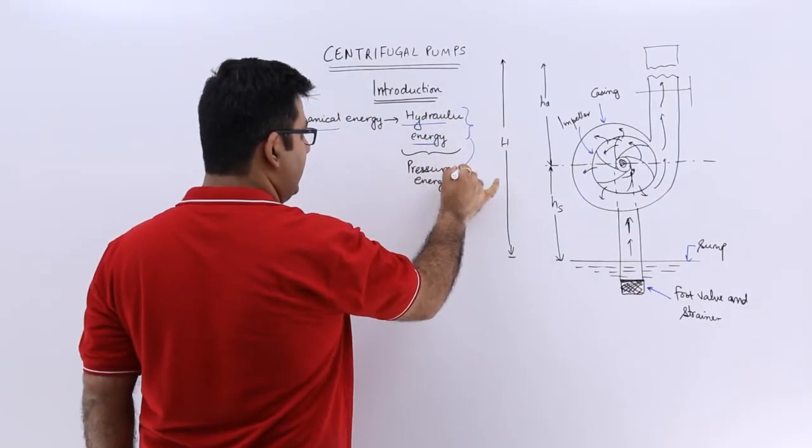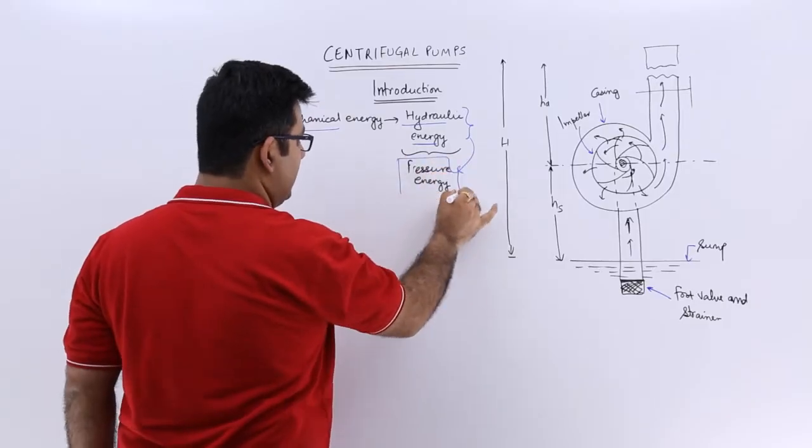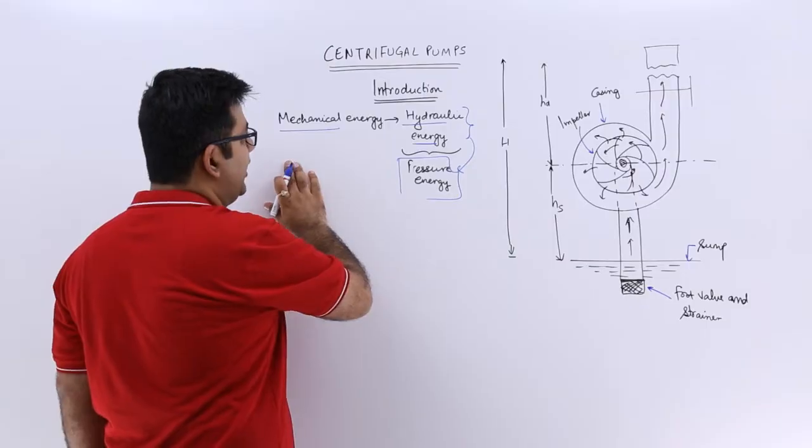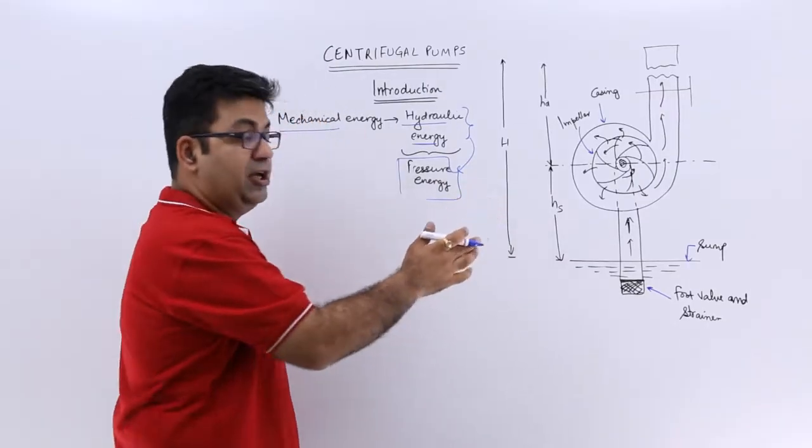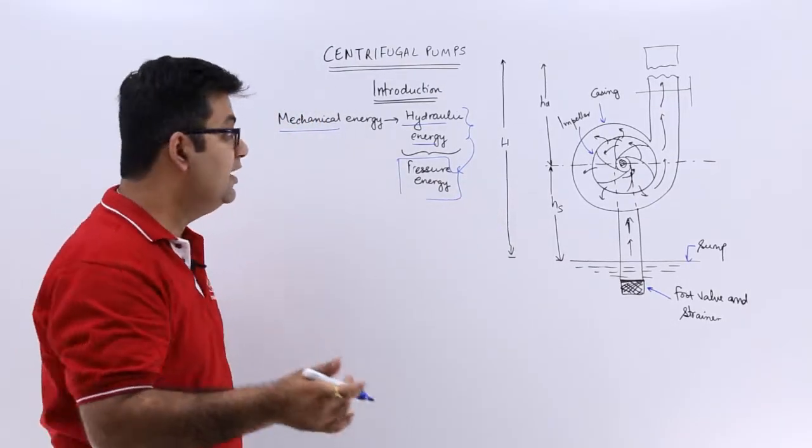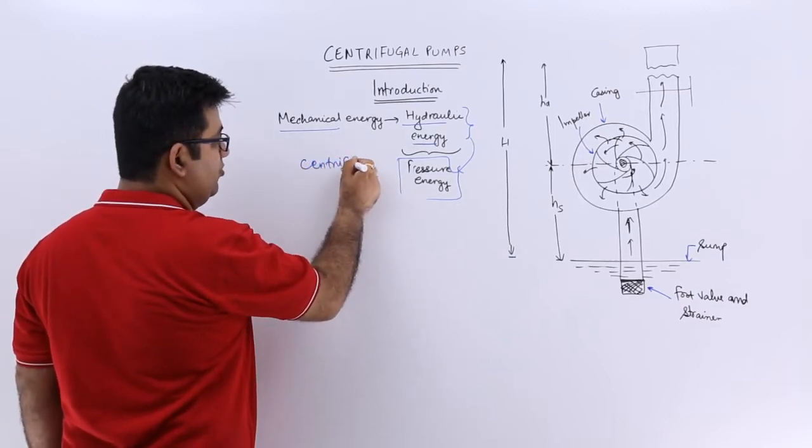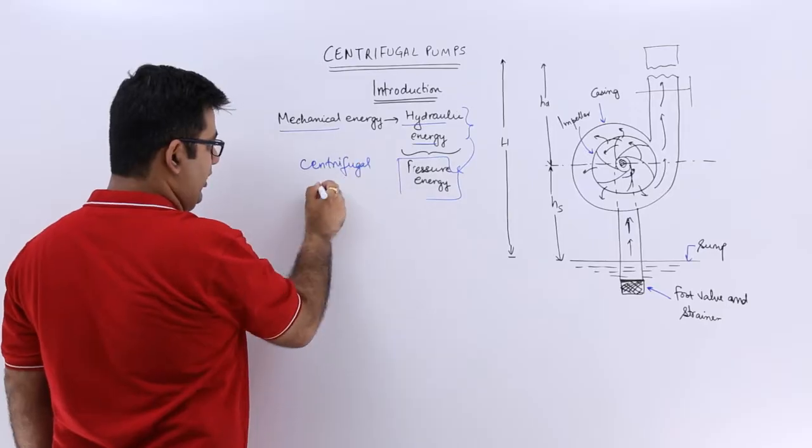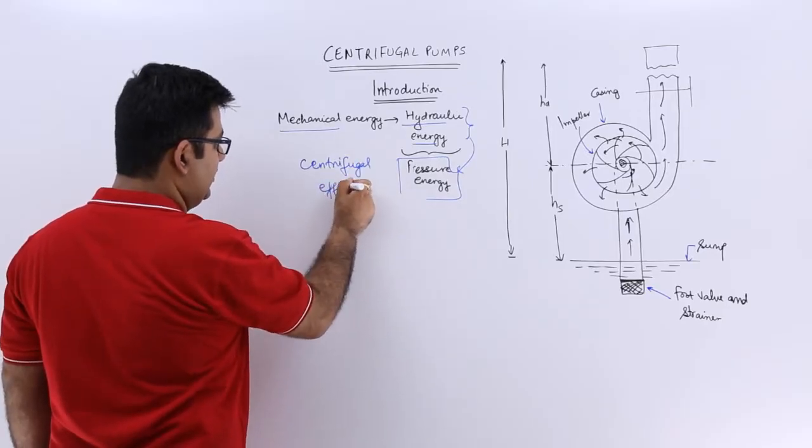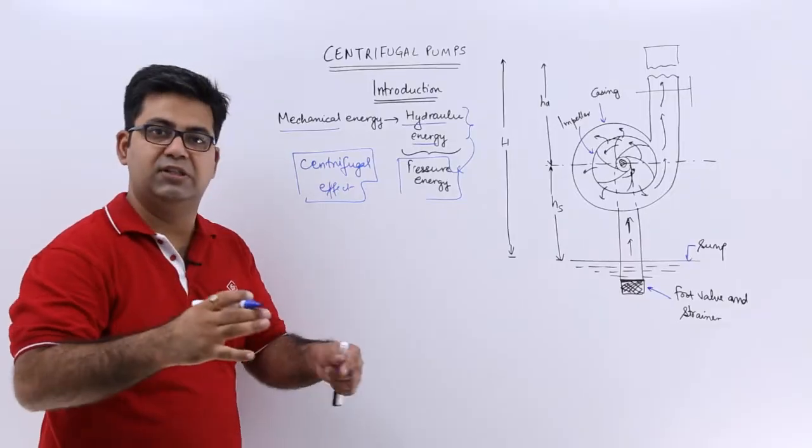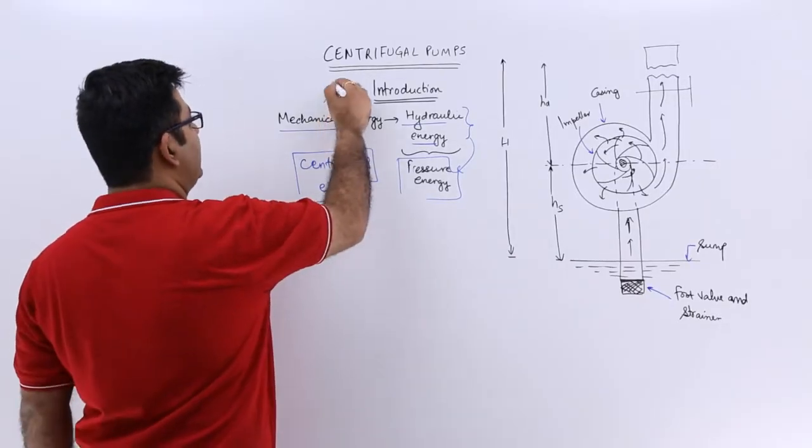Now this hydraulic energy is in the form of the pressure energy. And if this conversion from mechanical energy to the pressure energy or the hydraulic energy is done with the help of a centrifugal force or centrifugal effect, then the pump which is being used to do this conversion is called a centrifugal pump.